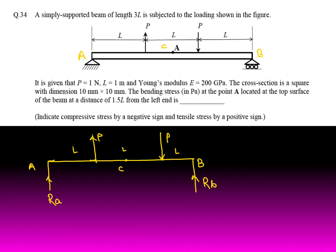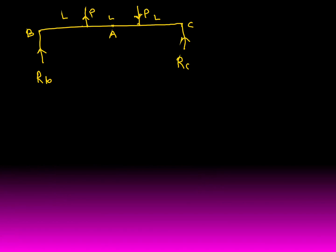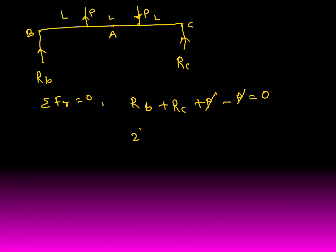The supports are at points B and C, giving reactions RB and RC. Considering all vertical loads, summation of Fy = 0: RB + RC (upward, positive) minus P minus P (downward, negative) equals zero. The P terms cancel, giving RB = −RC.